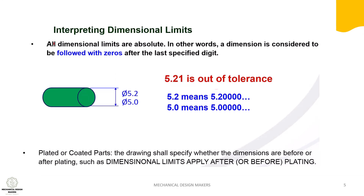The next topic is interpreting dimensional limits. Look at the part — it has a diametrical tolerance of 5.0 to 5.2. Here, 5.2 means 5.2000 followed by numerous zeros, and 5.0 means 5.0000 followed by numerous zeros. If the part is produced at 5.21, then it is out of tolerance and the part will be either rejected or will go for rework.